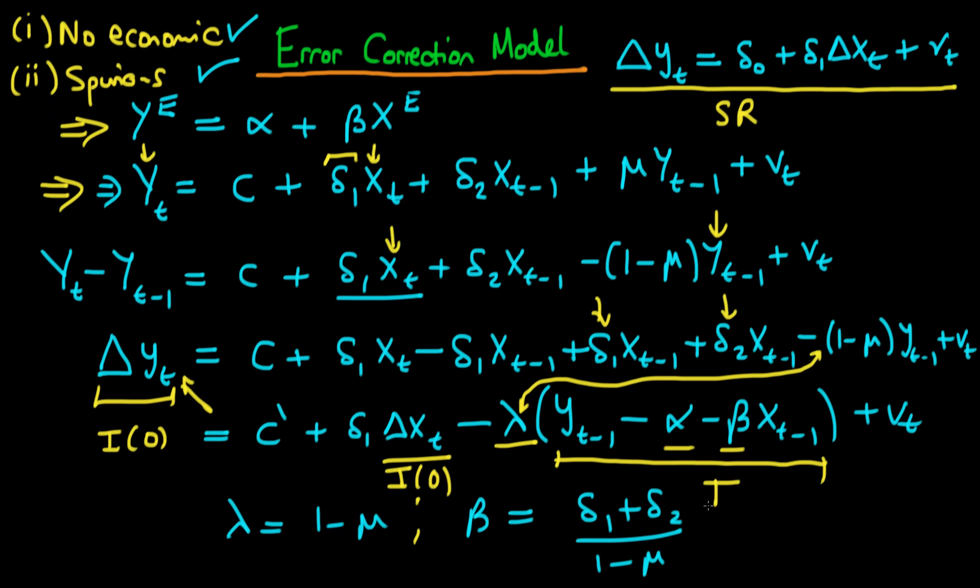In other words this term in the parenthesis here will be i0. So we've done away with our issue of spurious regression here if it so happens that y and x are co-integrated and we know the parameters of co-integration alpha and beta.